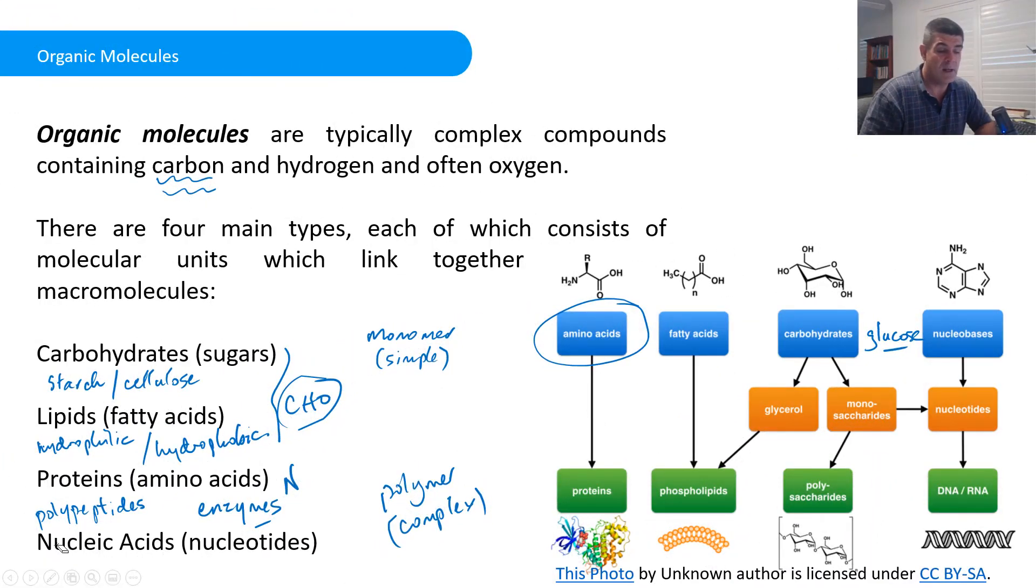The last group are the nucleic acids. So DNA and RNA. And they're based on nucleotide units. Now a nucleotide unit consists of a nitrogenous base, which is a little bit like what you see up here. As well as a sugar, a ribose or a deoxyribose sugar, and a phosphate group. And we've already seen phosphates are pretty important in ATP. They're also an important component of DNA.